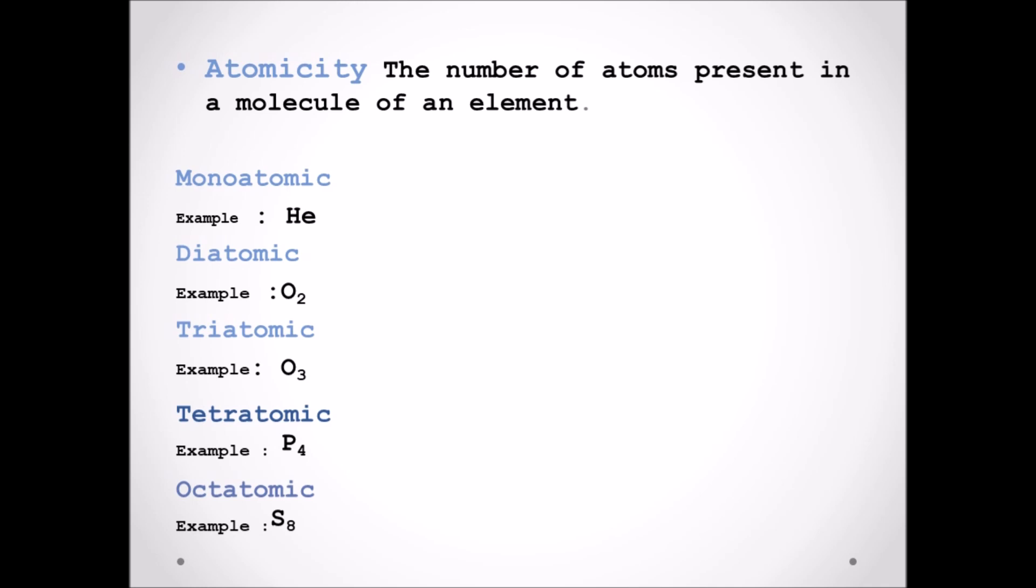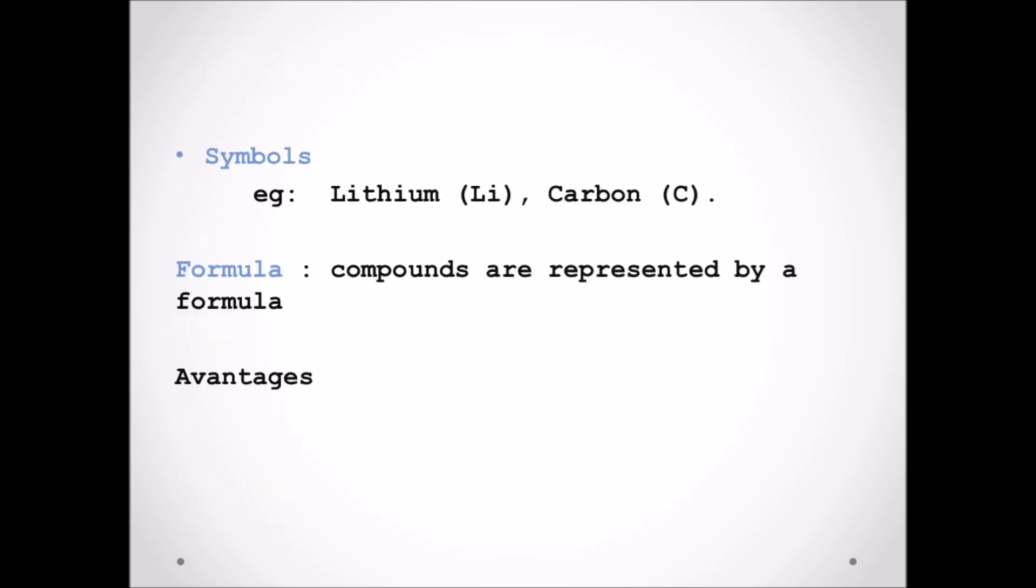Symbols: the short form used to write names of elements is called symbol. For example, lithium symbol is Li, capital L and small i, whereas carbon, the symbol will be C.